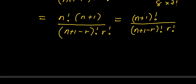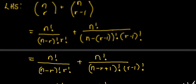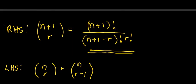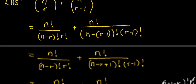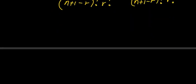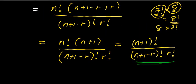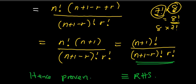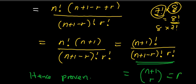This exactly resembles the right hand side. If we go back and check, our right hand side was n plus 1 factorial over n plus 1 minus r factorial times r factorial — and this is exactly what we have obtained. This is the same as n plus 1 choose r, which equals our right hand side. Hence proven.